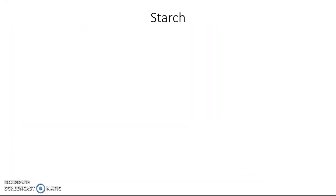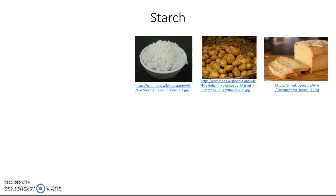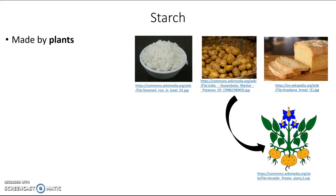Let's start with starch. Starchy foods include things like rice, potatoes, bread, and pasta — and they all originate from plant sources. So starch is a polysaccharide made by plants. If you think about potatoes, the plant uses them to store energy — and that is the function of starch. Plants make it in order to store energy.